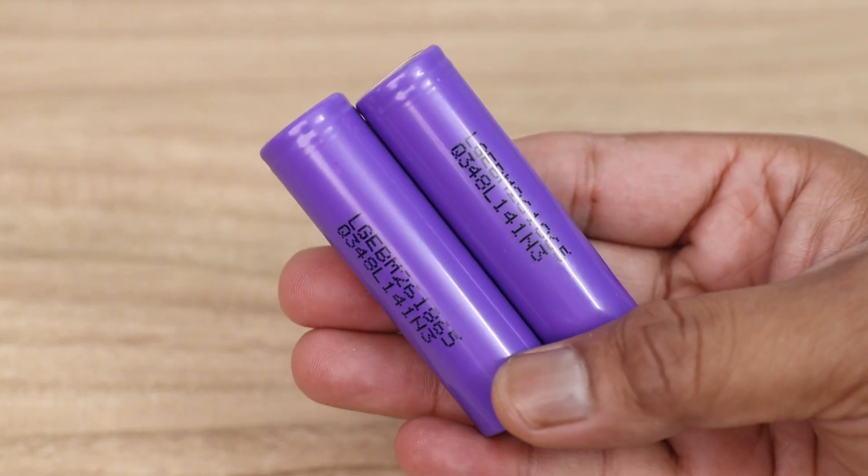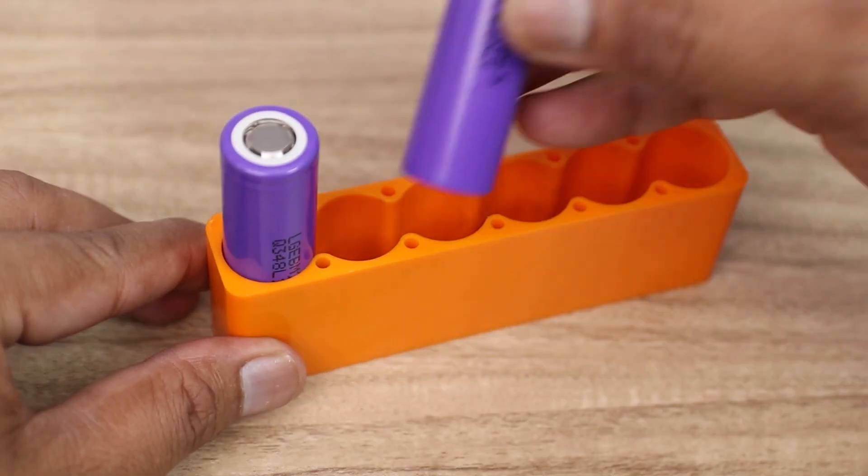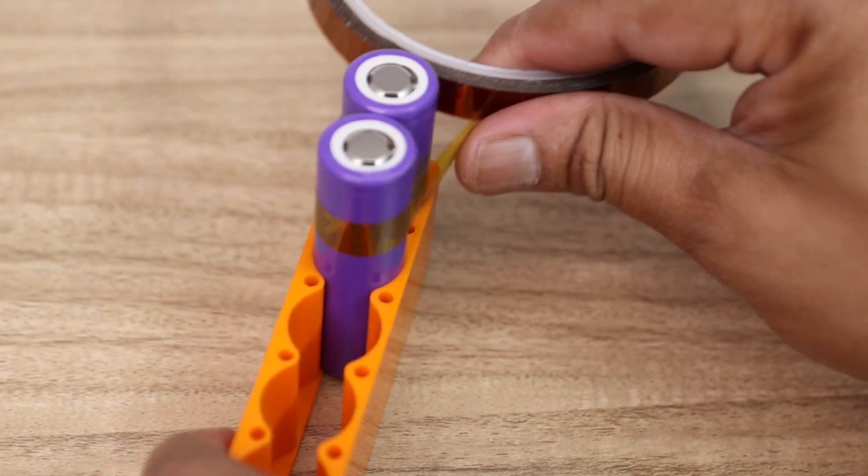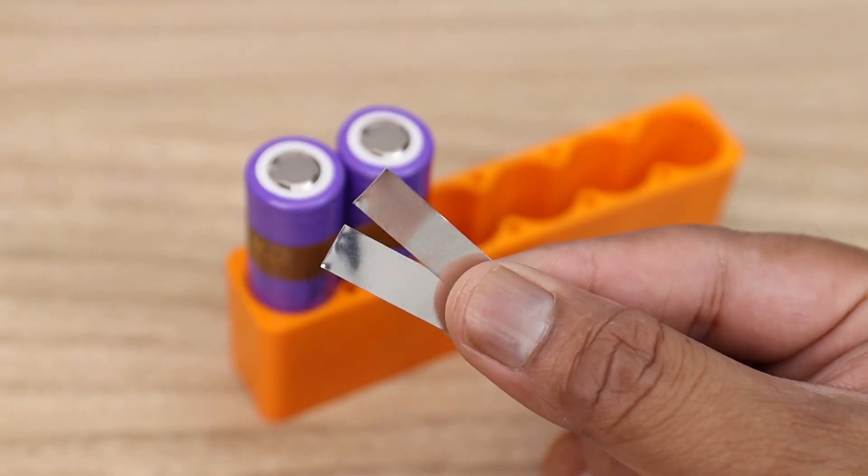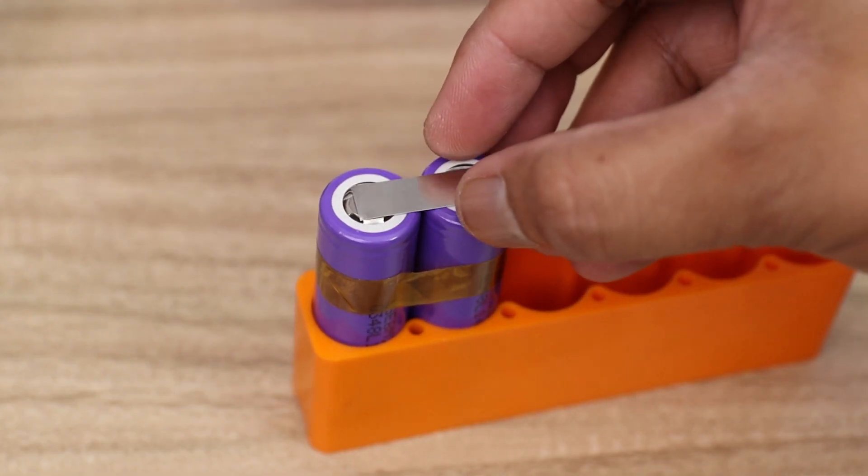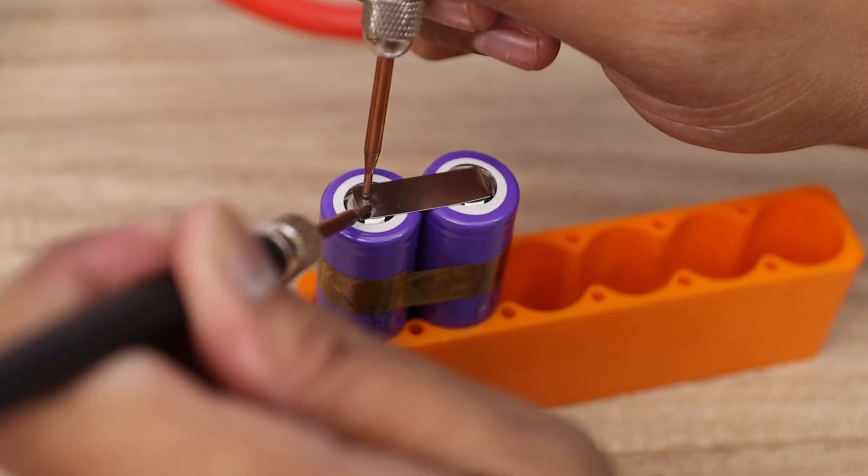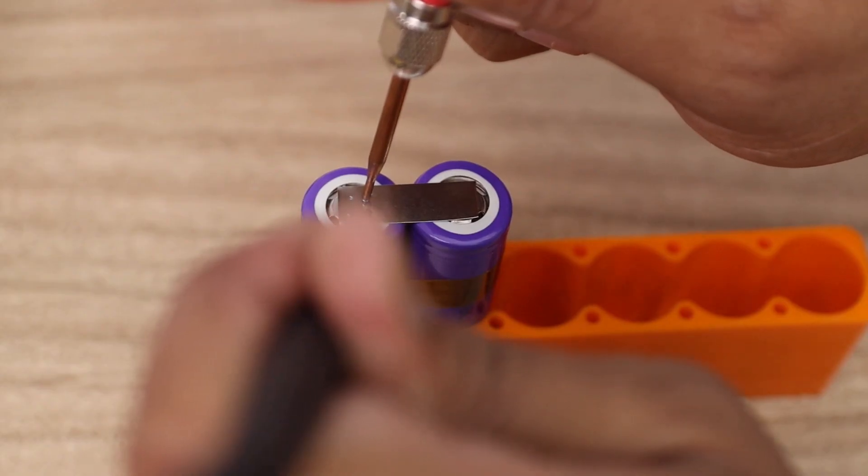First, we have to make the battery pack. Here I have used two 18650 lithium ion batteries to make the battery pack. To bind the battery together, I have used Kapton tape. Then I connected the battery terminals in parallel by using my spot welder. Here I have used 0.1 mm pure nickel strip to connect the battery terminals.